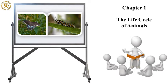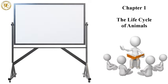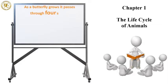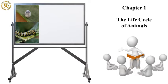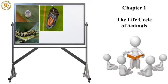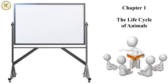An example of metamorphosis is the caterpillar and butterfly. Let's study in detail about the growth of a butterfly. As a butterfly grows, it passes through four stages. The first stage is the egg, the second stage is the larva, the third stage is the pupa, and the fourth stage — in which the butterfly is fully grown — is called the adult stage.